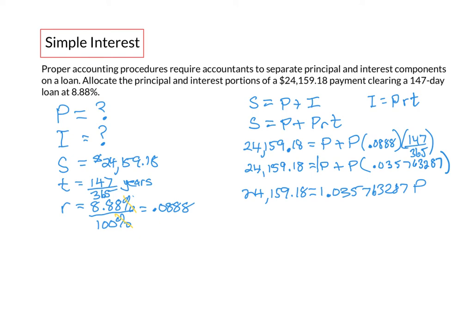Next we divide both sides by this number 1.035 so we can just get the single P by itself. And these would cancel and P would end up equaling $23,325.00128.